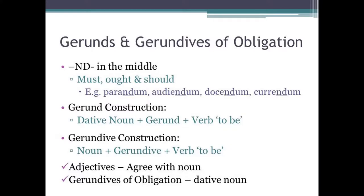Moving on, let's have a look at gerundives and gerunds. Both gerunds and gerundives have the letters ND in them, and are often translated in English by 'must,' 'ought,' or 'should.' A few examples include parandum, audiendum, docendum, and curendum, which all include the letters ND.